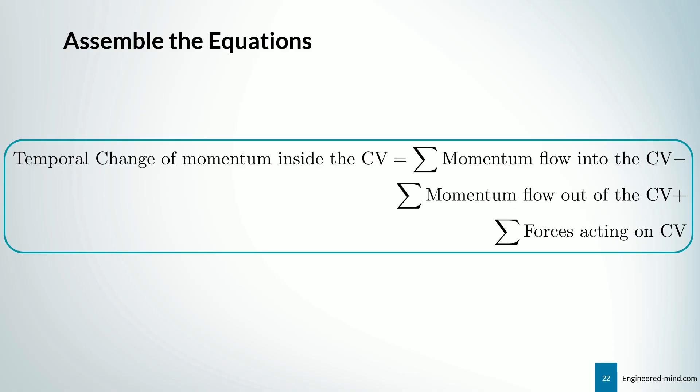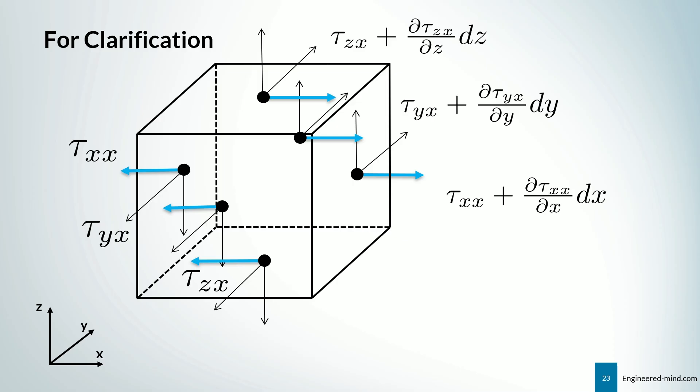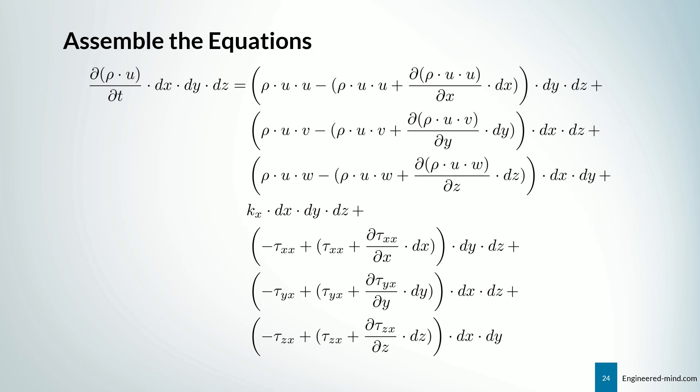So we assemble the equations now according to the formula that we have already described. So we first take the x direction. For clarification, I have colored all the arrows showing in x direction, positive or negative, in blue. And these are the components that will go into the x equation.